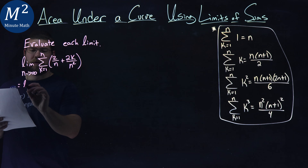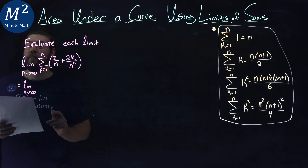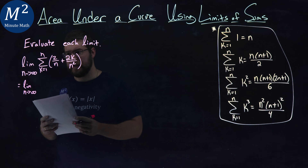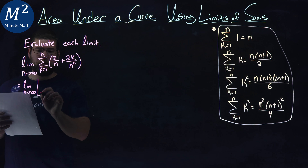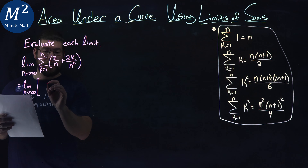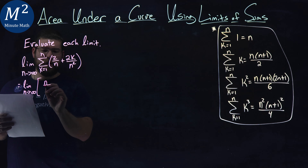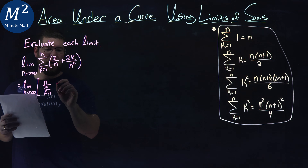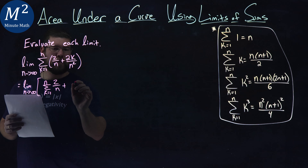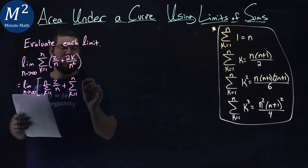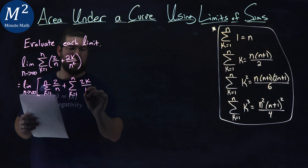We have to keep writing this whole limit as n approaches infinity the whole time. Now I'm going to try to break up the sum into two parts. I'm going to break it up so we have the sum from k equals 1 to n of 2 over n, plus another sum from k equals 1 to n of 2k over n squared.